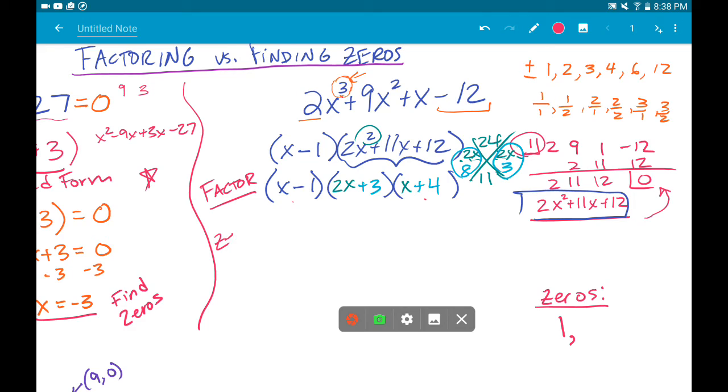But if you're asked for the zeros, you can take each one of these, or you can take this entire factored version, and when you set it equal to zero, it's the same as taking each piece and setting it equal to zero. I forgot my zero here. And when you solve for x, we should get three answers.